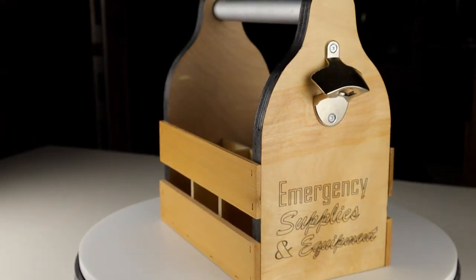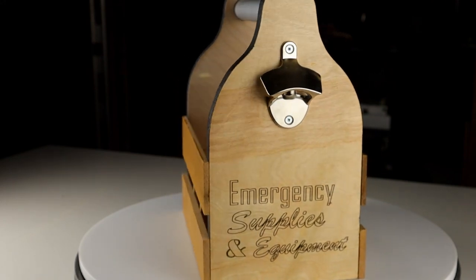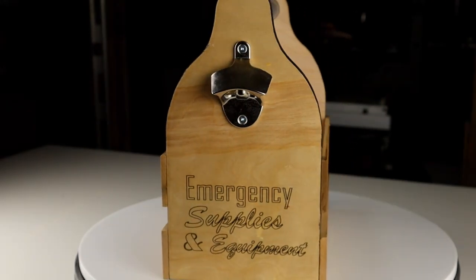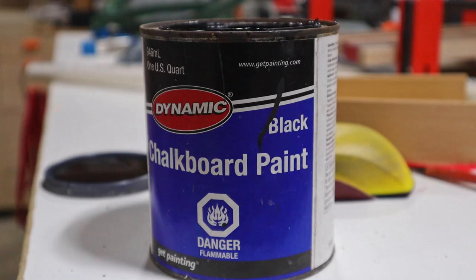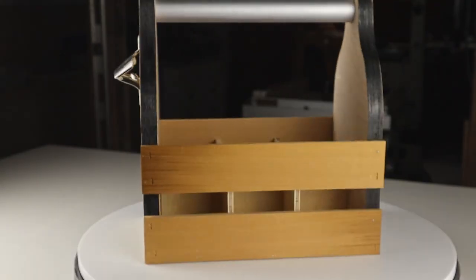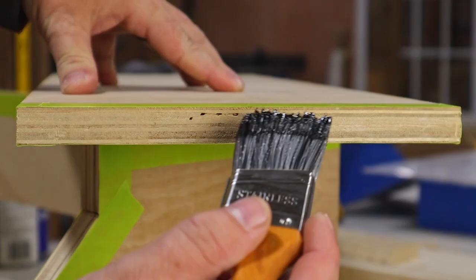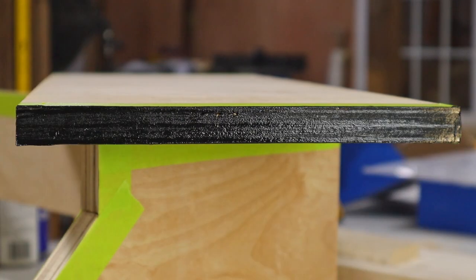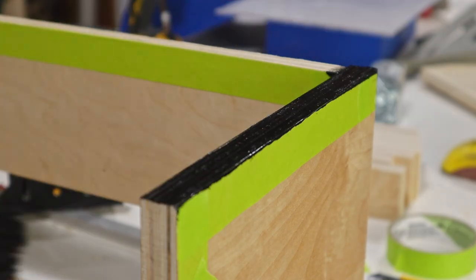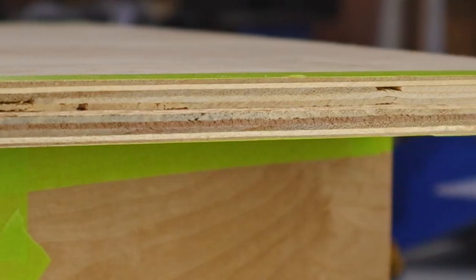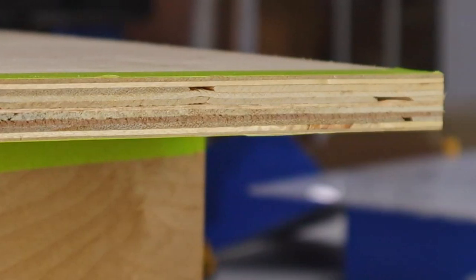A couple of weeks ago I made a beverage caddy using some of this same plywood and on a whim I painted the edges of it with this chalkboard paint that's been sitting around the barn for years and I was pleasantly surprised with how well it turned out. The paint is really thick so it does a good job of covering the layers of the plywood edge and with this plywood being low cost the layers are often uneven and there are a lot of voids so I really wanted to cover all that up.